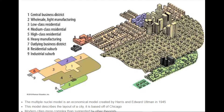Harris and Ullmann argued that cities don't grow around a single nucleus but several separate nuclei, with each nucleus acting as a growth point. The theory was formed based on the idea that people have greater movement due to increased vehicle ownership. This increase in movement allows for a specialization of regional centers. The number of nuclei around which the city expands depends upon situation as well as historical factors.